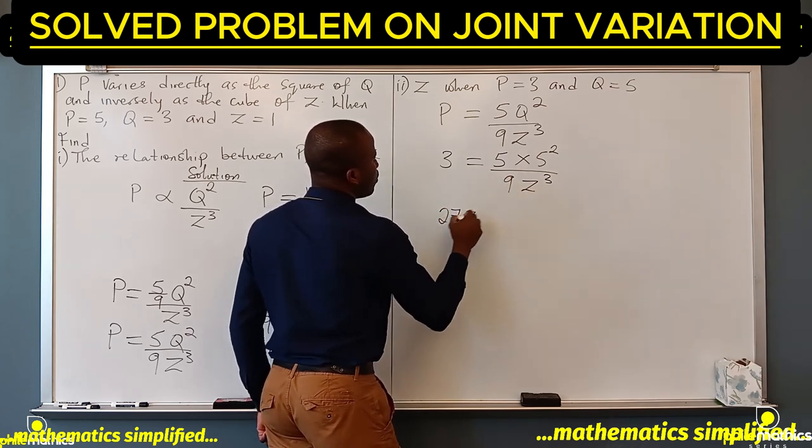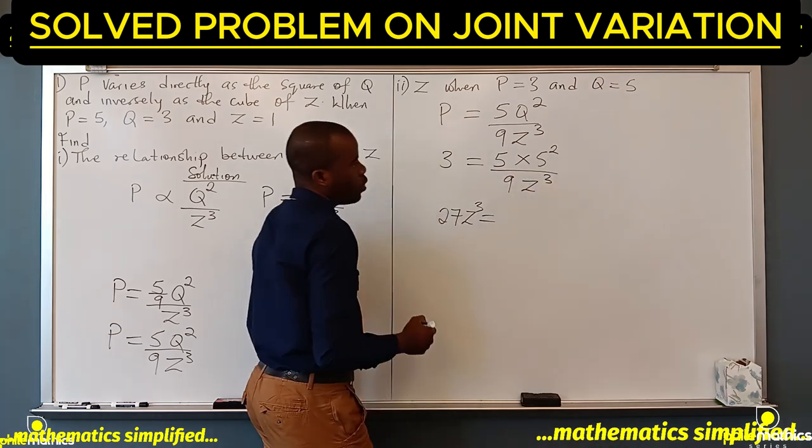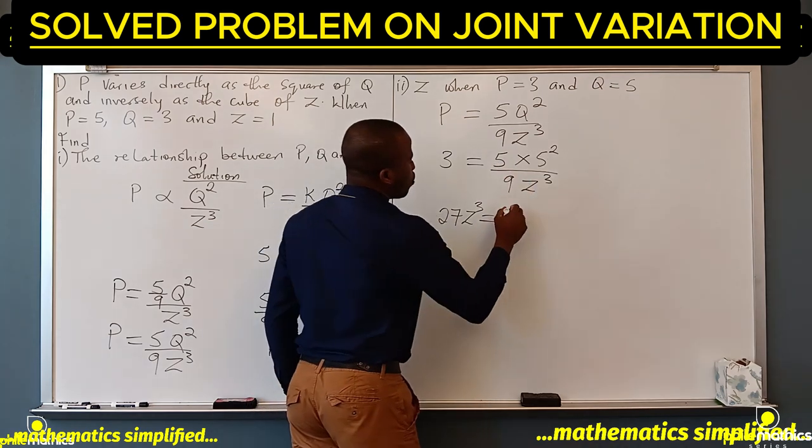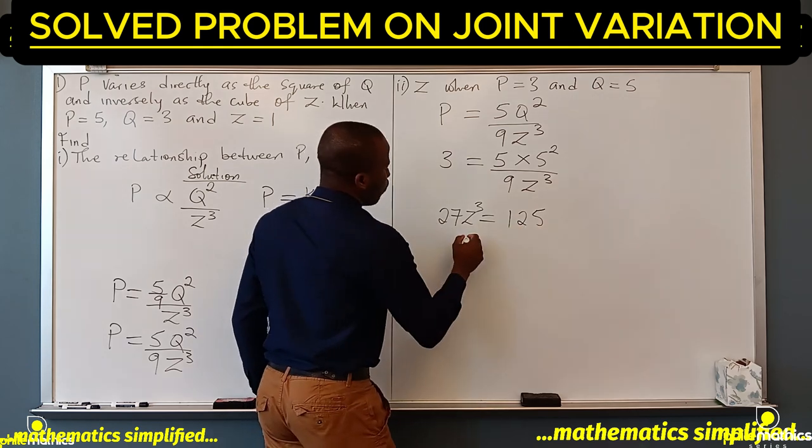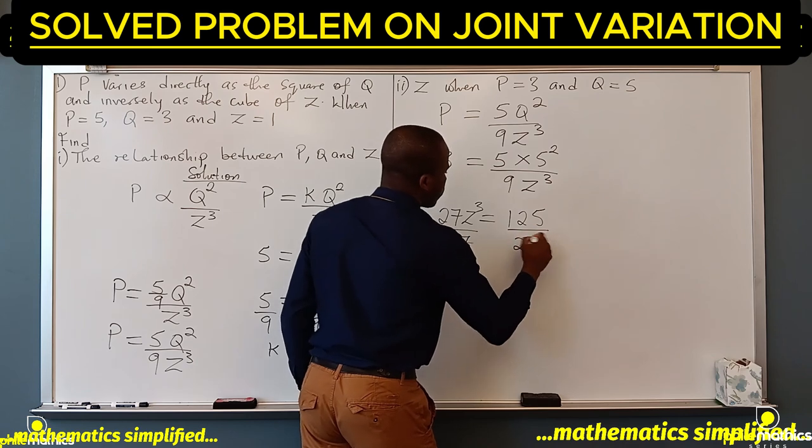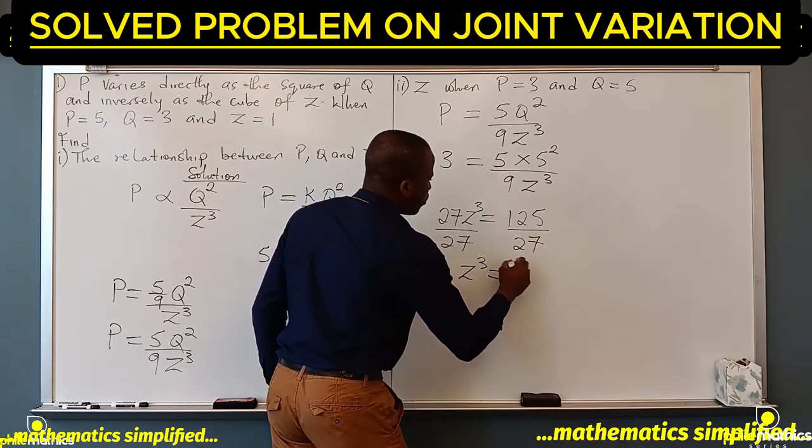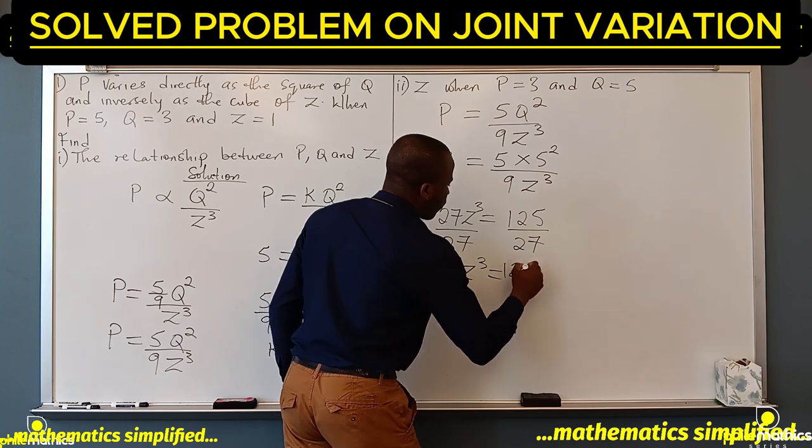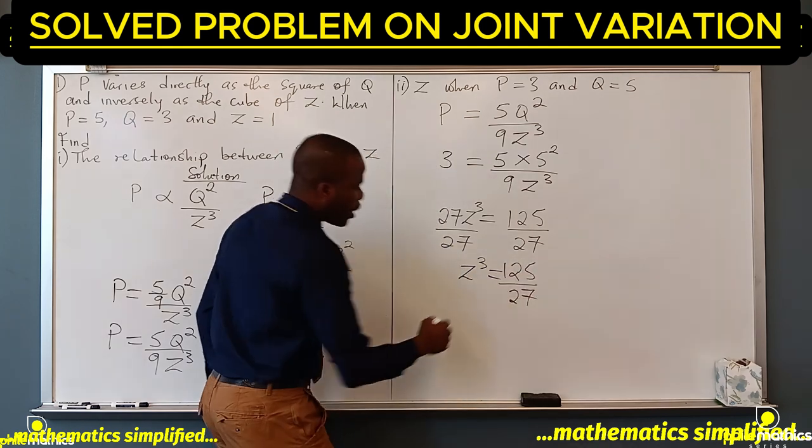If we cross multiply, 9 times 3 is 27 z cubed, because this is 25. 25 times 5 is 125, and so we divide both sides by 27.